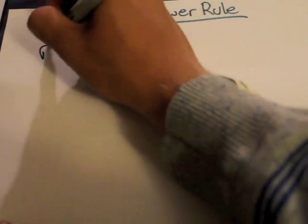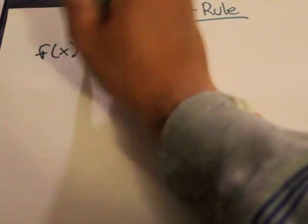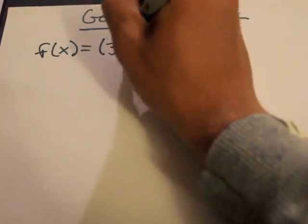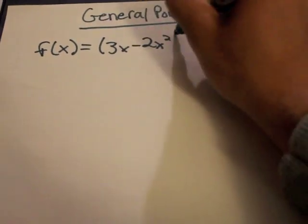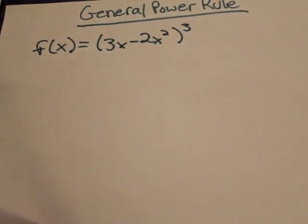So I'll start with the function f(x) equals 3x minus 2x squared, cubed. That's our original function.